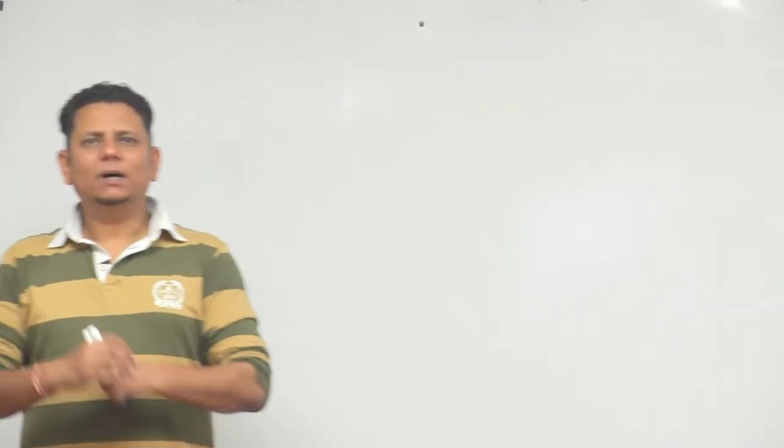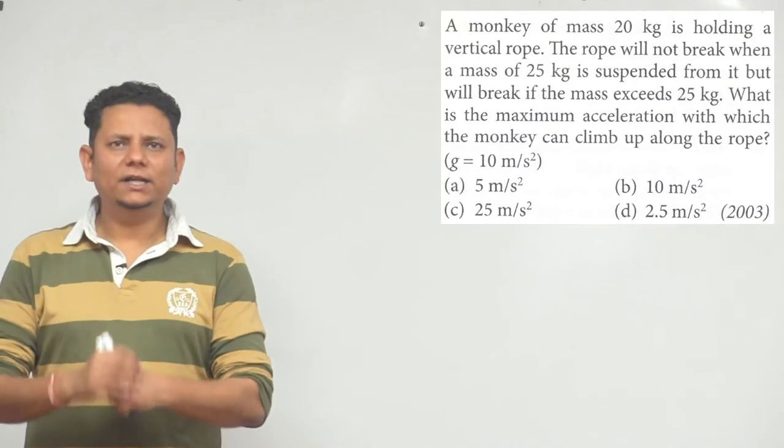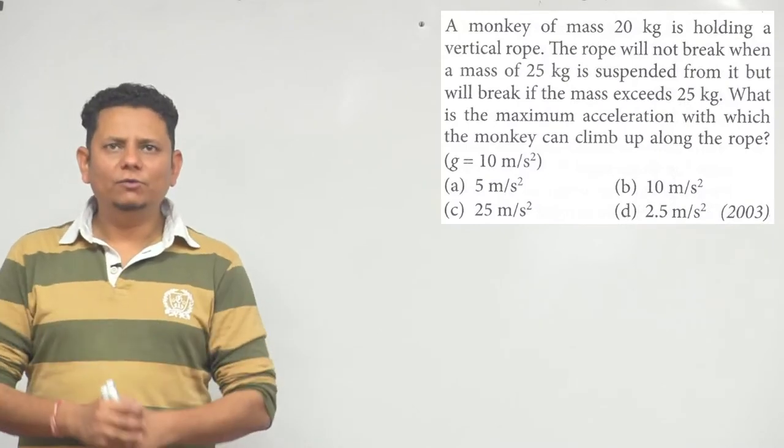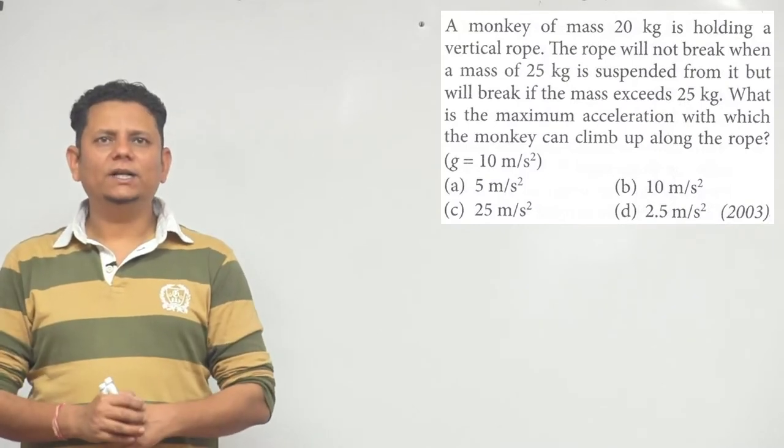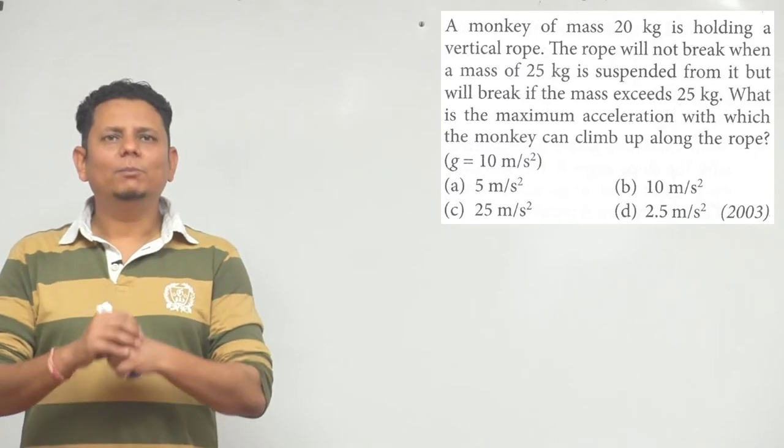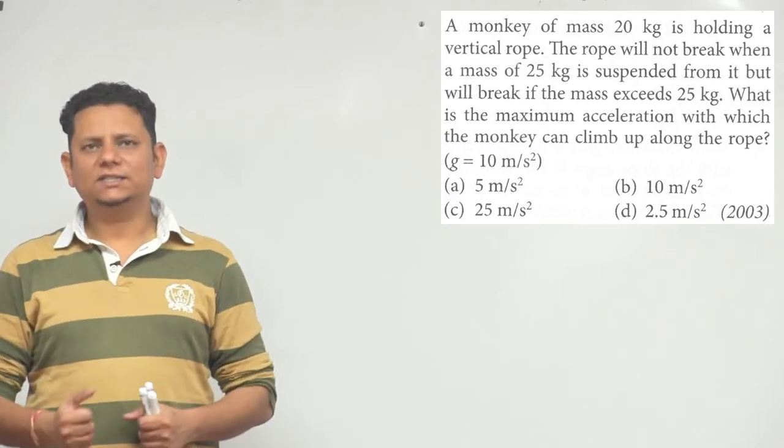Now, next question, 23rd question. It says a monkey of mass 20 kg is holding a vertical rope. The rope will not break when a mass of 25 kg is suspended from it, but it will break if the mass exceeds 25 kg.